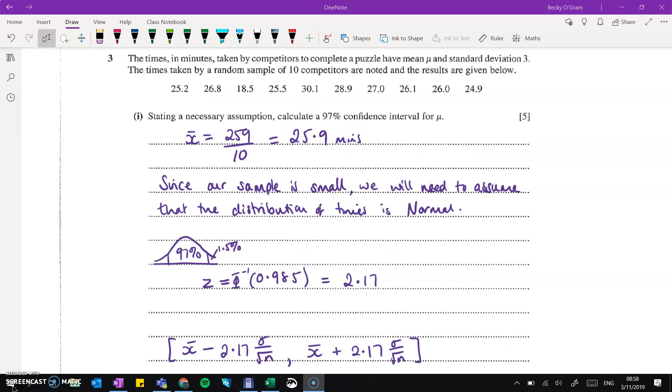On question three, we are given a sample. We're told that the mean and standard deviation from the group that this was taken from is mu and 3. And then we have this set of 10 numbers that make up our sample. We want to work out 97% confidence interval for the mean mu. So we can work out our sample mean as x bar. That's 25.9. We also are asked to state a necessary assumption.